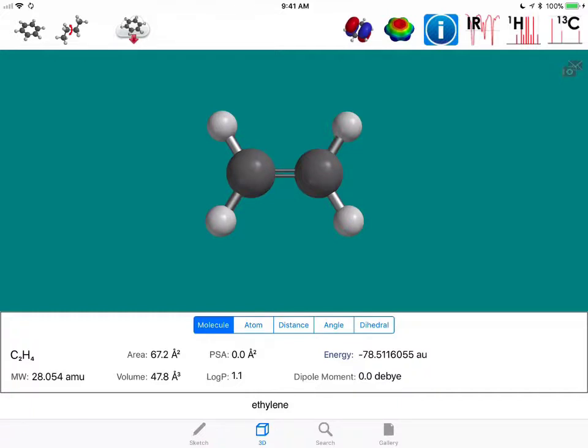In the prior screencast, we looked at an alkane, which was sp3 hybridized carbons. Now we're going to look at how sp2 hybridized carbons affect the different forms of spectroscopy, being IR, proton, and carbon NMR.